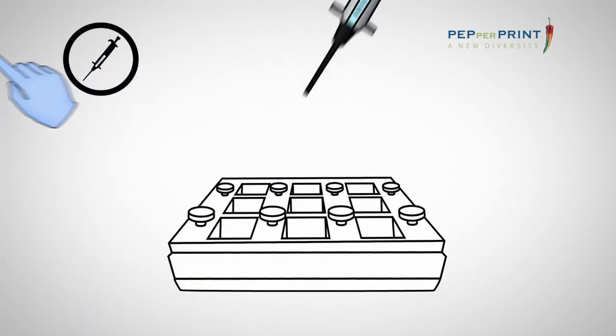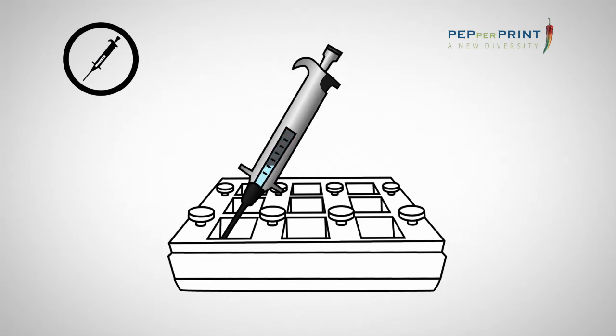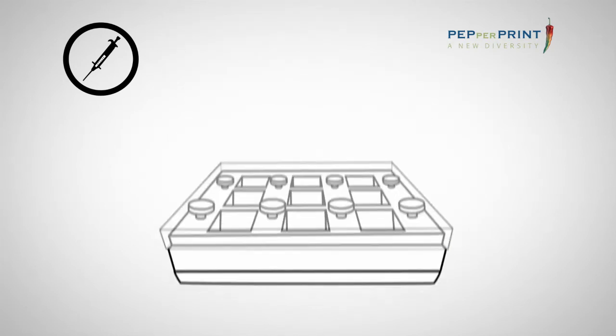Slowly add blocking, washing or incubation buffers to one or more wells of the incubation tray. Finally, add the lid of the incubation tray to avoid evaporation.